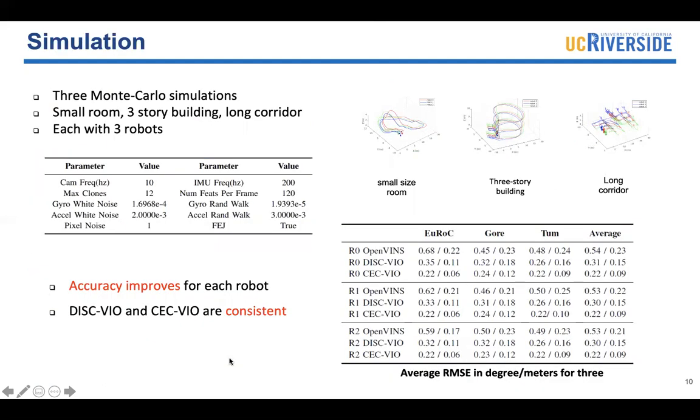We first evaluated our method in simulations. We simulated three different datasets. The first is a small room dataset. The second is a three-story building dataset. The third one is a long corridor dataset. In all three datasets, we compare the DISC-VIO and the centralized equivalent VIO against the single robot case, referred to as OpenVINS. It means each robot runs OpenVINS independently. They do not make use of the commonly observed features to improve the accuracy. Obviously, the accuracy is improved for all three robots.